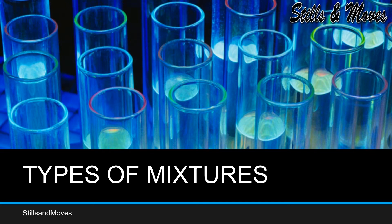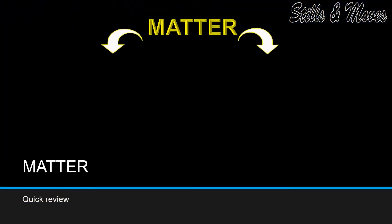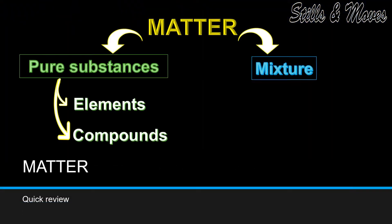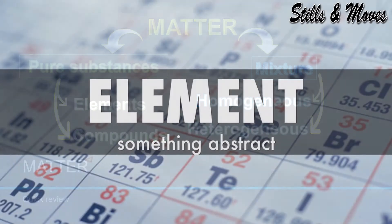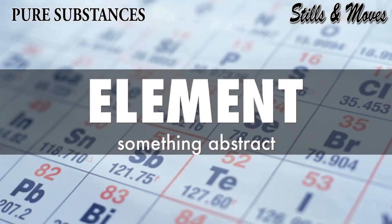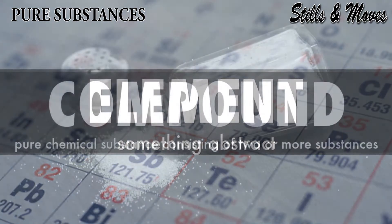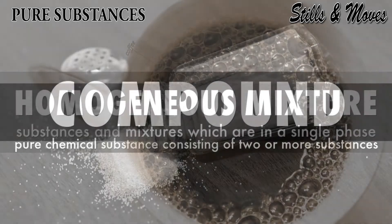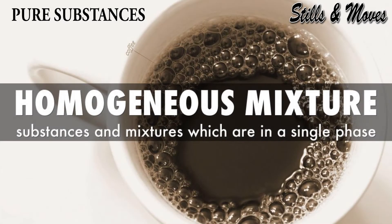Before we discuss today's topic, we will revise about matter. Matter has two types: pure substances and mixtures. Pure substances can further divide into elements and compounds. Here we pay attention to mixtures, which we can further categorize into two groups: heterogeneous mixtures and homogeneous mixtures.